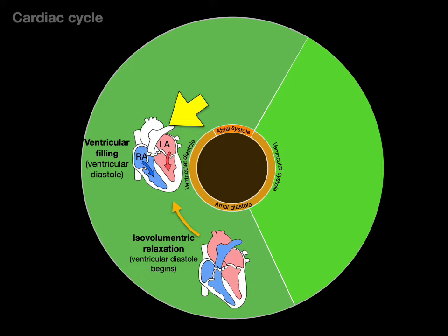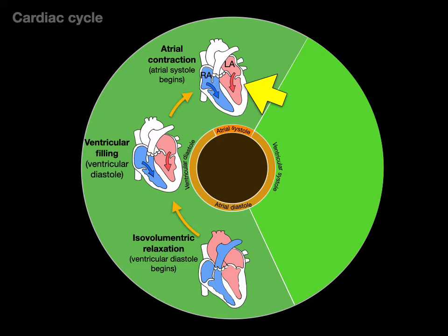Then ventricular filling occurs: the pressure in the atria becomes greater than ventricular pressure, so blood flows from the atria down into the ventricles. This is the largest portion of ventricular filling and is passive — blood moves simply because atrial pressure exceeds ventricular pressure. At the very end of ventricular diastole, we have atrial contraction, or atrial systole, delivering the atrial kick — the last bolus of blood forced into the ventricles.